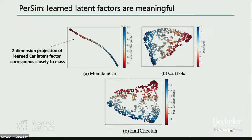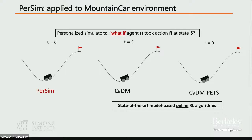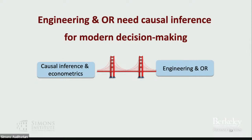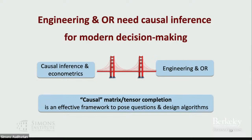Comparing Persim with the state-of-the-art CADM (context-aware dynamic model), which learns simulators with online data: in dark gray is what Persim learns; in the true trajectory is what actually happens. Persim tracks the true trajectory closely. Because the data is offline and confounded, CADM fails. My takeaway message: engineering and OR needs causal inference for modern decision making, and causal matrix and tensor completion is an effective framework to pose these questions and design algorithms. Thank you very much.